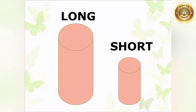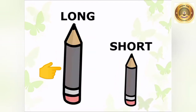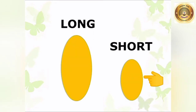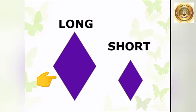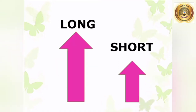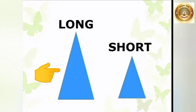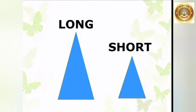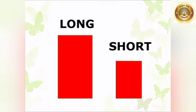Now, children, this is a long cylinder and this is a short cylinder. Here, this is a long pencil and this is a short pencil. Long triangle, short triangle. Long oval, short oval. Long diamond, short diamond. Long pink arrow, short pink arrow. Long red rectangle and a short red rectangle.